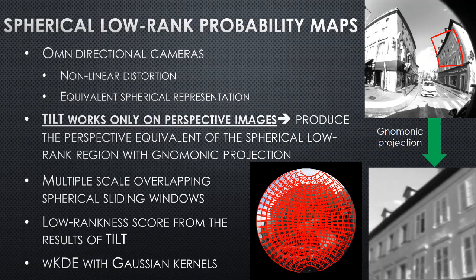The first step in our method is to obtain low-rank probability maps. As stated in the title, we are working with omnidirectional cameras, which means we need to deal with some of the specific features of this kind of camera — for example, the nonlinear distortion in their images.